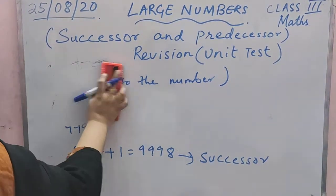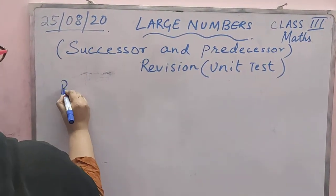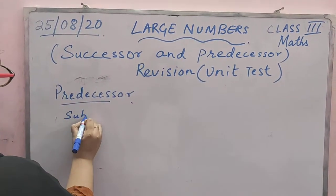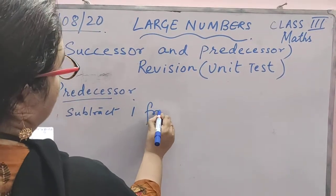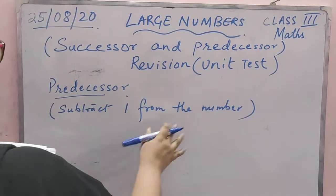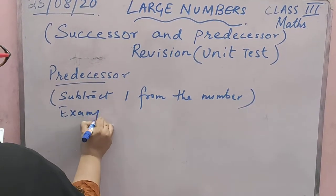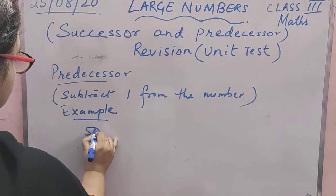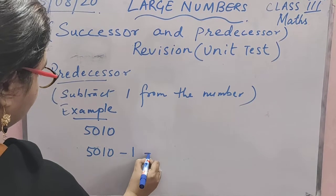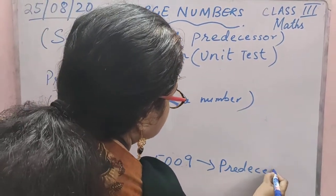So now we will move to the predecessor. Whenever you want to find the predecessor of any numeral, you just need to subtract 1 from that number. So we will see with an example. So this is your predecessor.